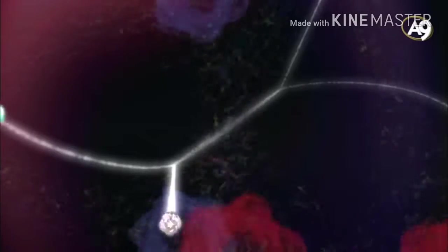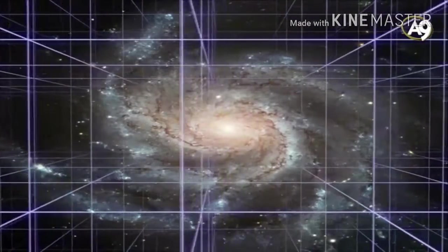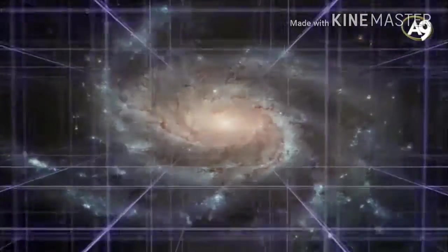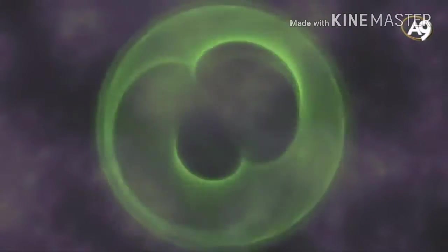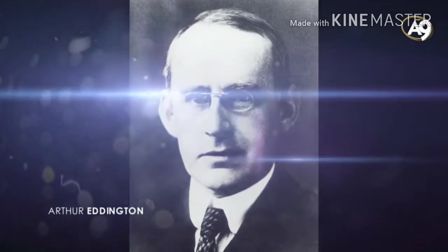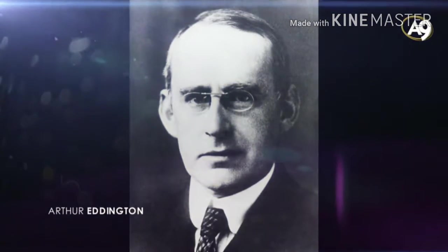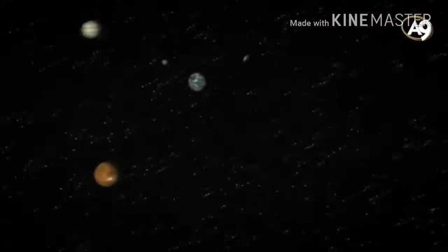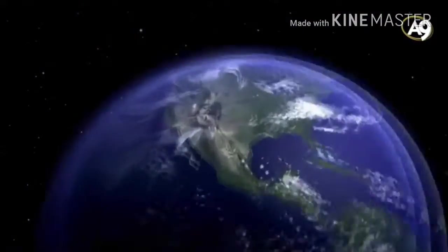Despite all the scientific data, materialist circles refuse to accept the fact that the universe was created out of nothing. A statement by famous materialist physicist Arthur Eddington makes clear the psychological state of materialists: Philosophically, the notion of an abrupt beginning to the present order of nature is repugnant to me. Nonetheless, scientists' criteria should be the accuracy of the data, not their own ideology. Even though Eddington had hard times acknowledging this fact, science has proven that the universe came into being suddenly, that it was created.